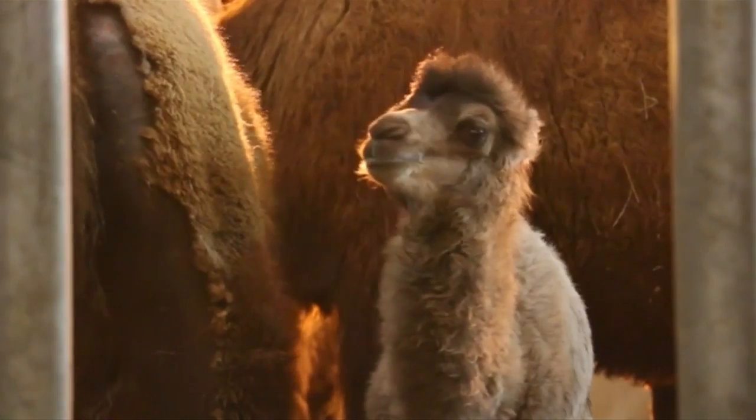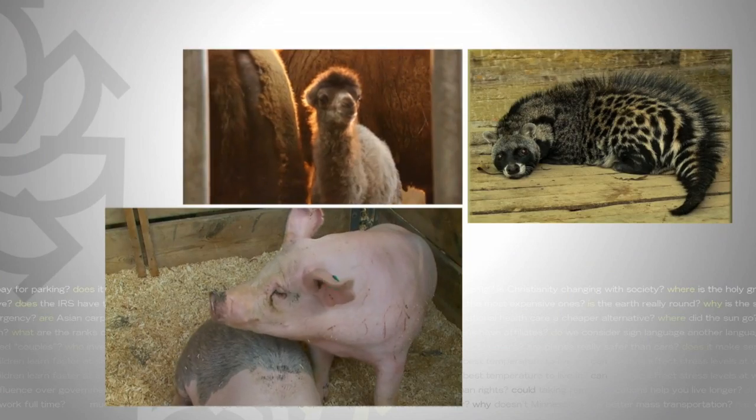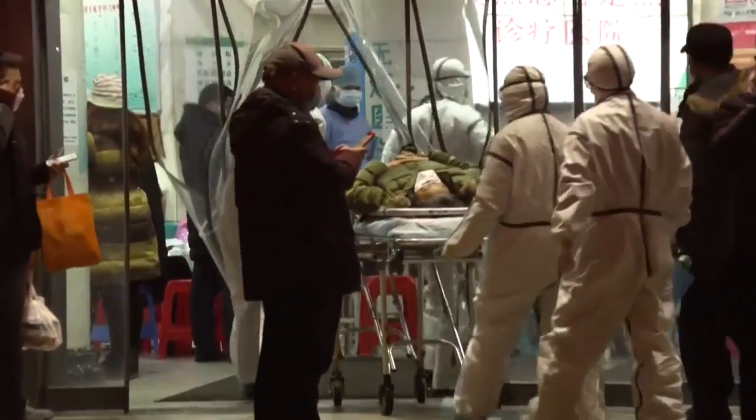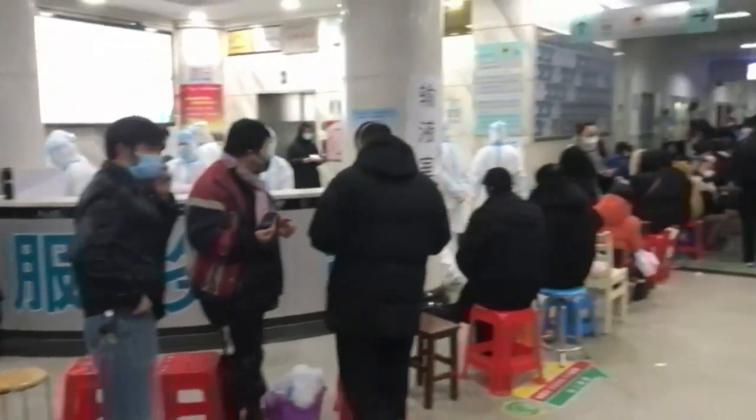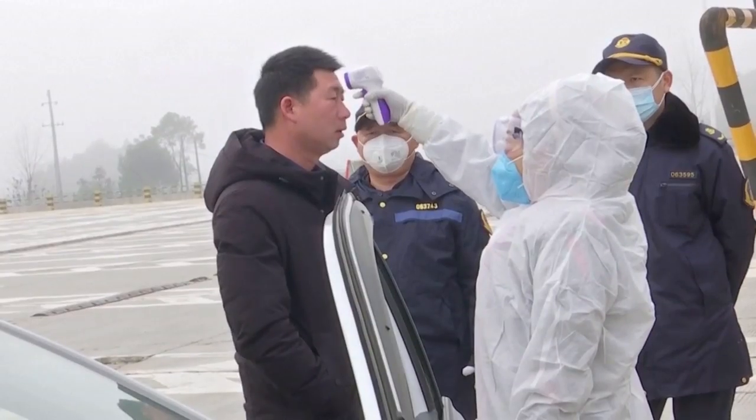It depends on the virus in terms of what type of exposure. MERS jumped from camels, SARS from civet cats, swine flu from pigs. That virus jumped from the animal to the human and then modified itself so that it could cause illness in humans. What makes this situation unique is the fact that this virus has not only infected people, but has modified itself so that it can spread between people.